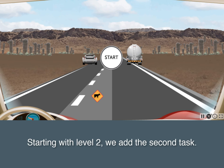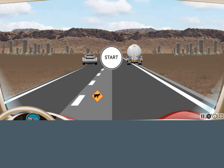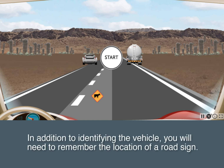Starting with level two, we add the second task. In addition to identifying the vehicle, you will need to remember the location of a road sign.